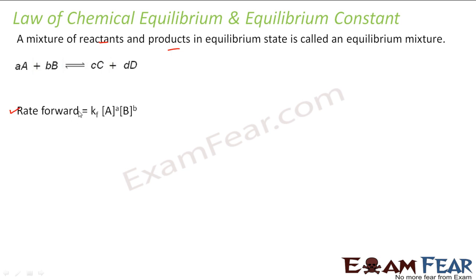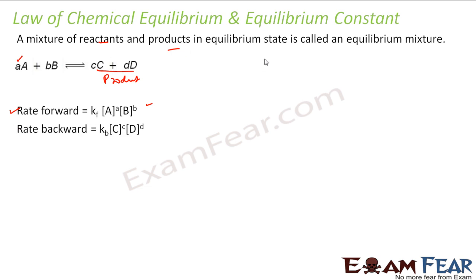For this reaction, the rate of the forward reaction will be some constant kf multiplied by [A] to the power a, multiplied by [B] to the power b. Similarly, for the backward reaction — where c moles of C plus d moles of D give reactants — the rate of the backward reaction will be some constant kb multiplied by [C] to the power c, multiplied by [D] to the power d.